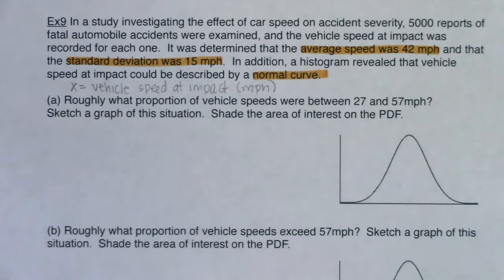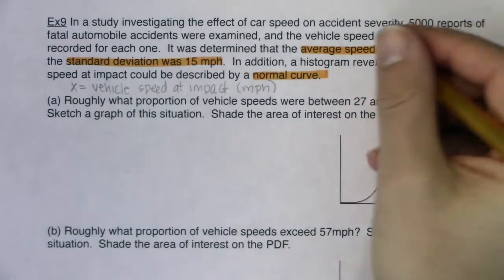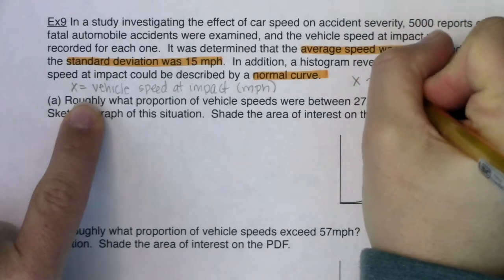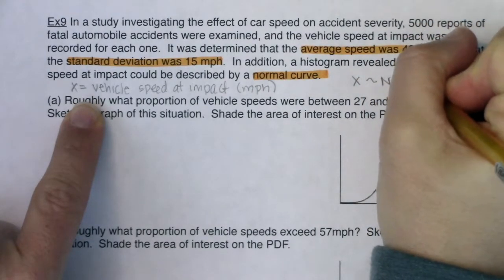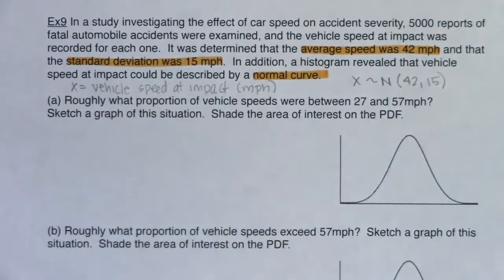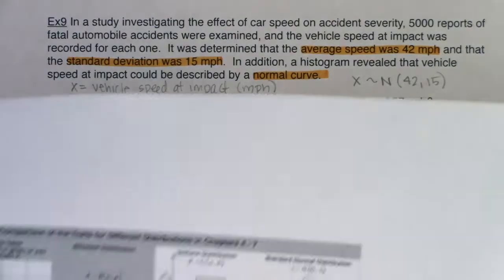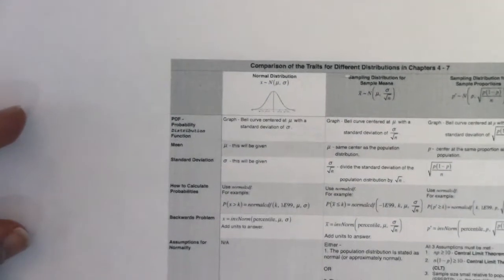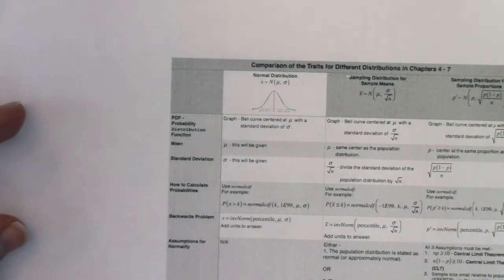Just with those three pieces of information, we pretty much have our setup and we have a special notation for that. So we would say X — our variable, vehicle speeds at impact — are distributed normally. We know we have the bell curve for our shape, the mean is 42 miles per hour, and the standard deviation is 15 miles per hour. In terms of that trait table, as soon as you see normal curve, you know you're either on the standard normal distribution on the front page or on any regular old normal distribution on the back page.